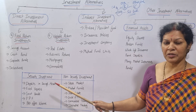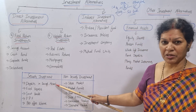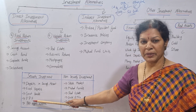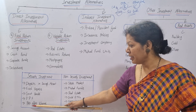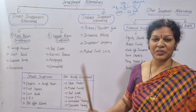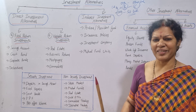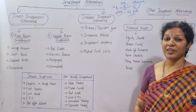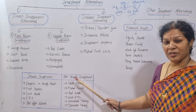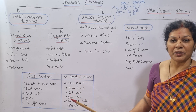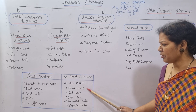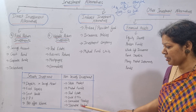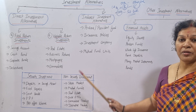Security investments include savings accounts, fixed deposits, government bonds, Public Provident Fund (PPF), and post office schemes — these are always safe. The return may be less, but they are secured. Non-security investments have higher risk but higher return potential — you may even lose your principal. Examples include the stock market, mutual funds, real estate, gold ETFs, commodities trading, and derivative trading. These are all non-security investments.